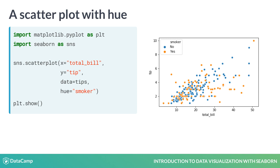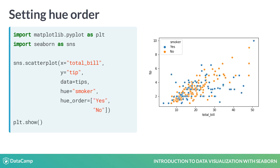Hue also allows you to assert more control over the ordering and coloring of each value. The hue_order parameter takes in a list of values and will set the order of the values in the plot accordingly. Notice how the legend for smoker now lists yes before no.